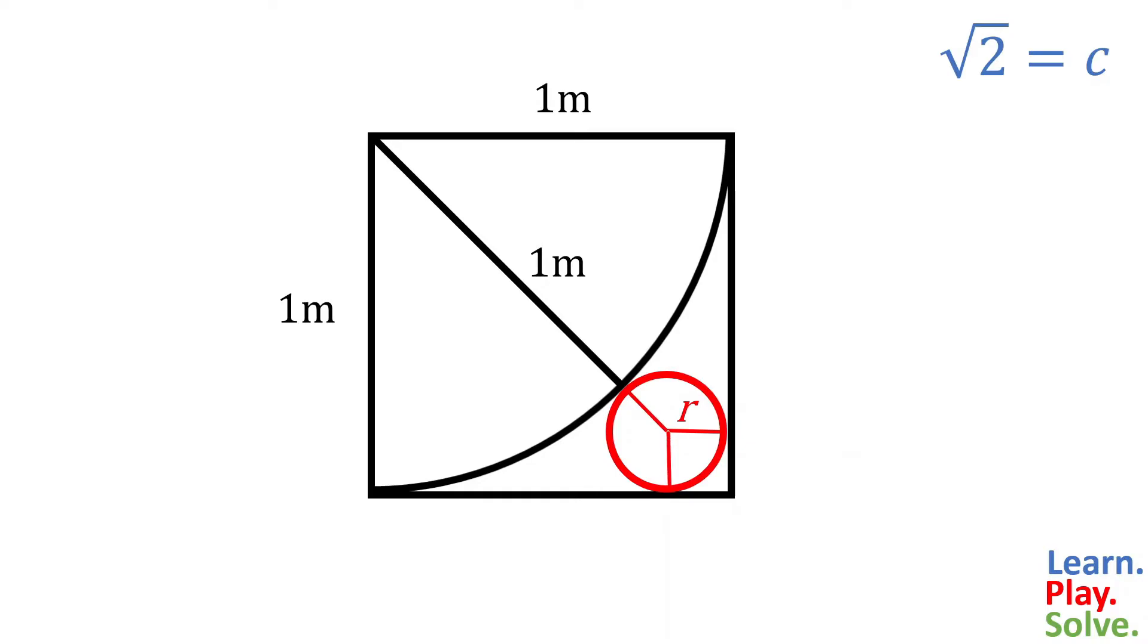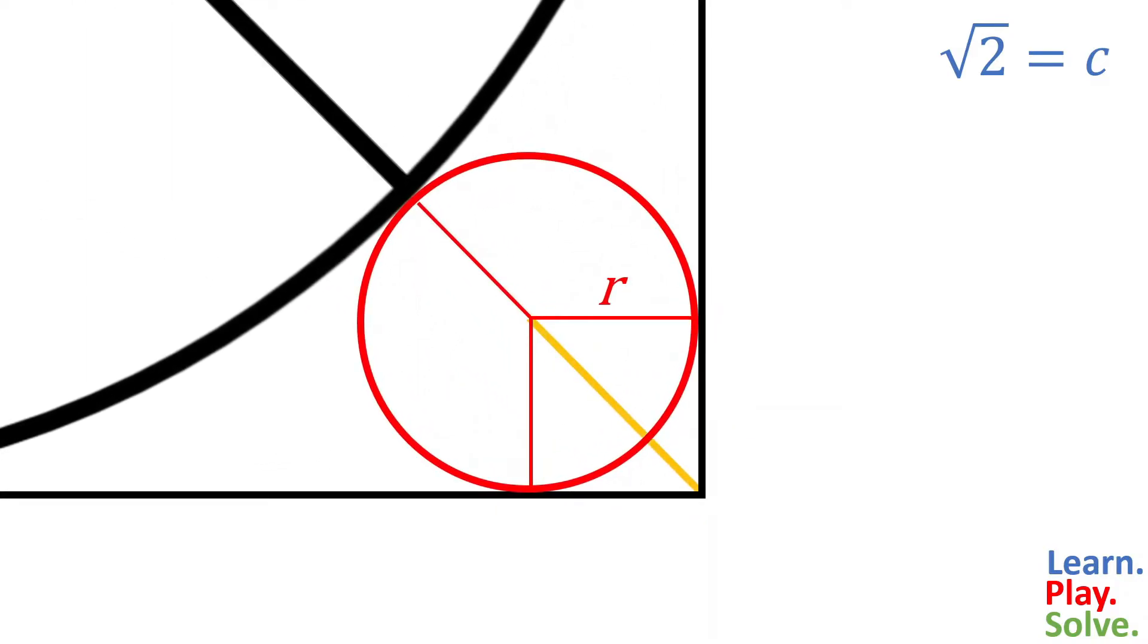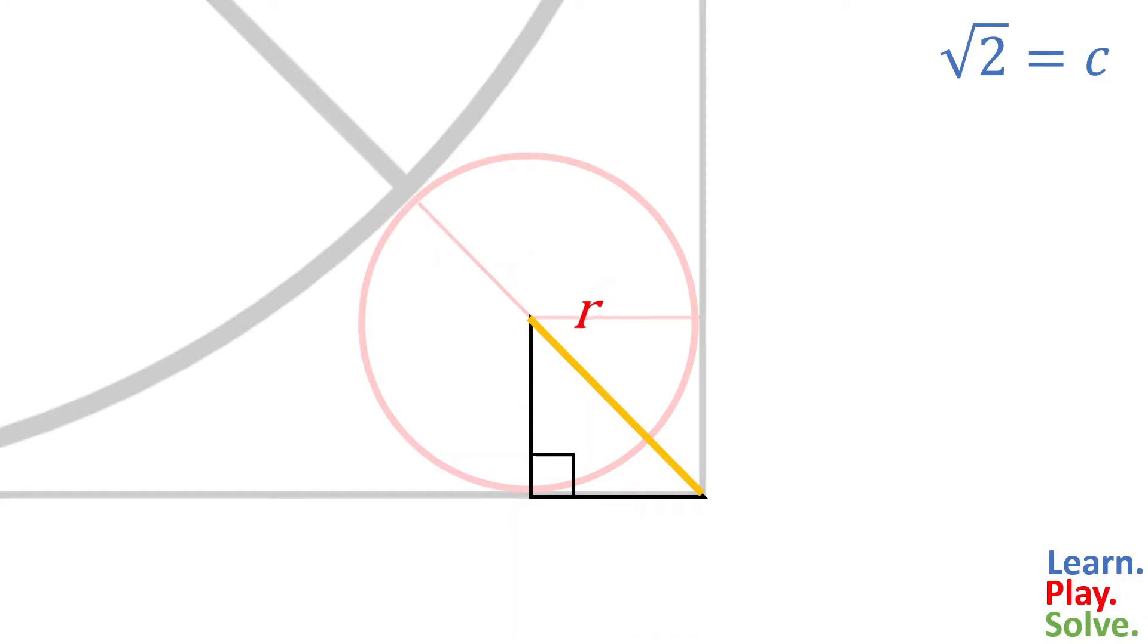For the remaining part, we can think of it as another smaller square, of which we can find the diagonal by again using the Pythagorean Theorem. We've already used c for the main diagonal, so let's call this one d. If we plug in the legs for a and b, then solve, we get d equals r times the square root of 2. So that's the length of the small diagonal.